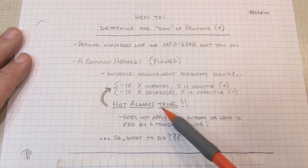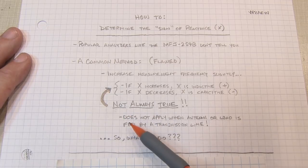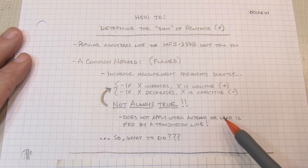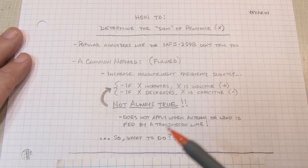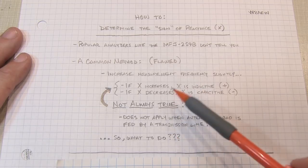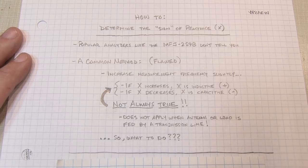The problem is this isn't always true. In fact, it does not apply when you're measuring an antenna or a load through a transmission line, because the transmission line will do some transformations on the impedance. So if we can't follow this method when measuring a load through a transmission line, what do we do?